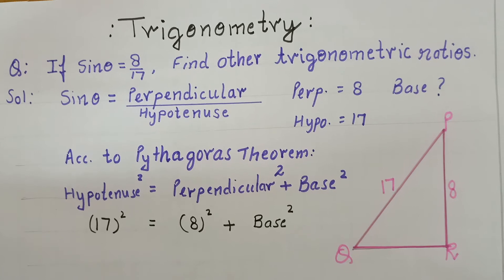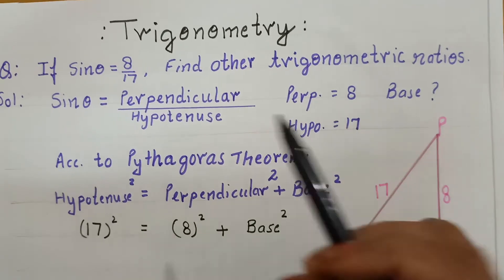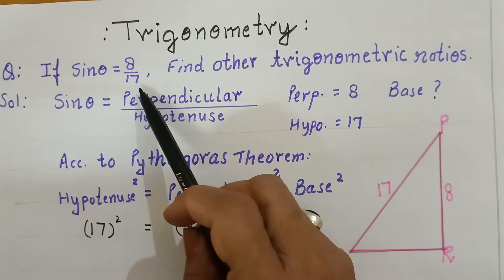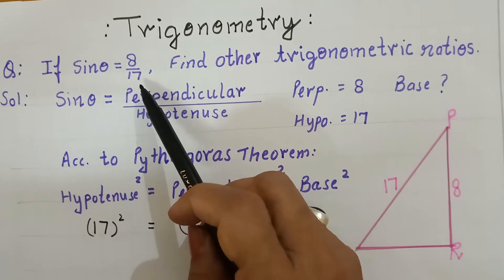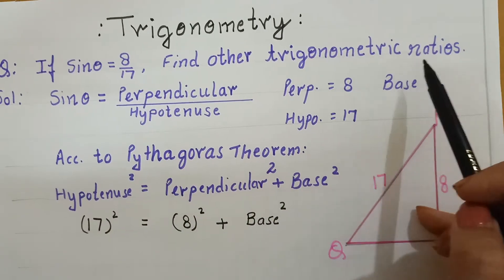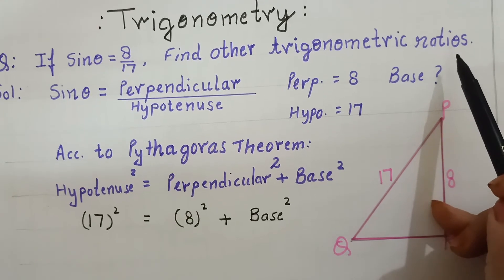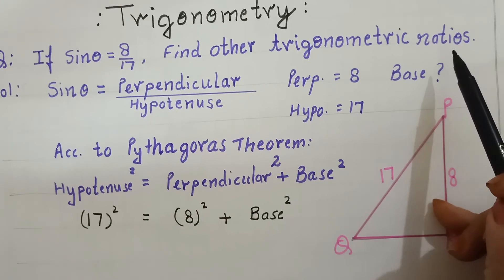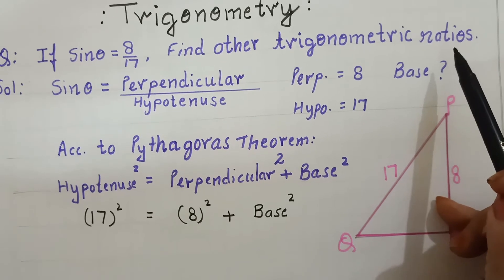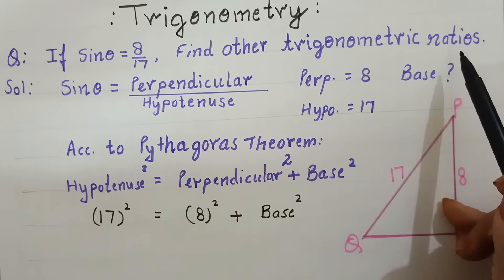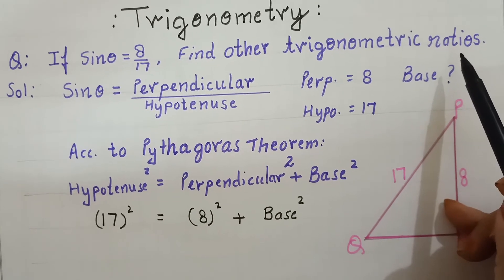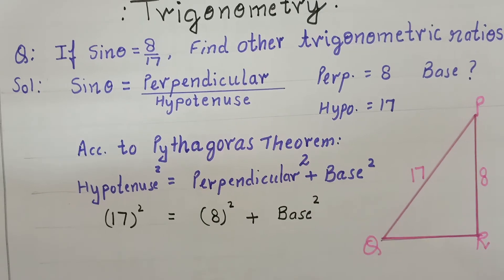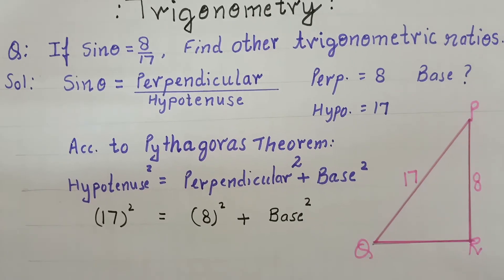The first question is: sin theta equals 8 divided by 17. Sin theta ki value humay given hai. Find other trigonometric ratios — that means cos theta, sec theta, tan theta, cosec theta, and cot theta humay calculate karna hai.